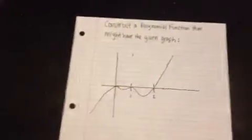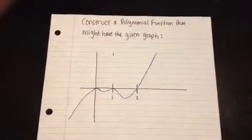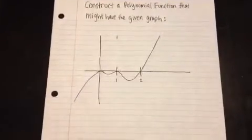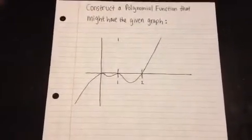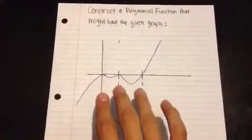And so that's what you needed to know before attempting this problem. So when you're constructing the polynomial function from a given graph, when you're asked to do that, the first thing you need to do is start with your zeros.